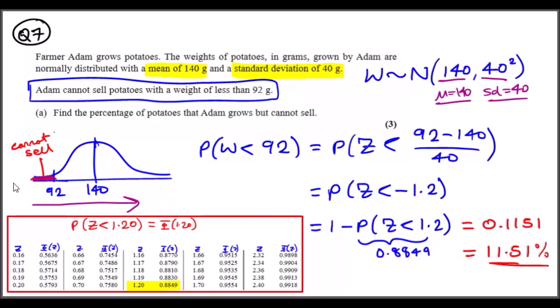Let's see question a: find the percentage of potatoes that Adam grows but cannot sell. Indirectly, this is the probability of weight less than 92. So we write down, find the probability W less than 92.